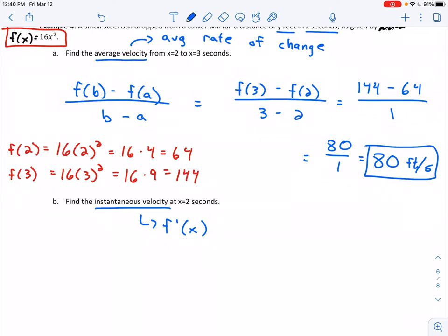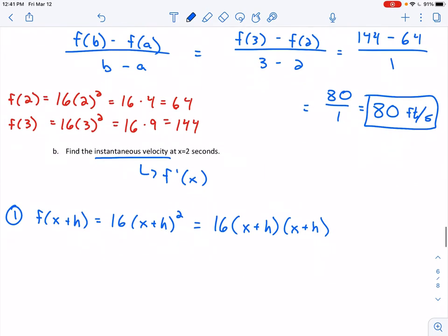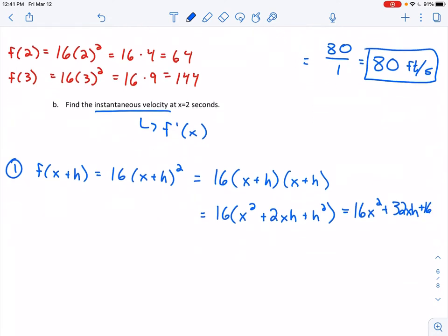We have to use our four-step process. Step one: find f(x+h) and simplify. So 16 times (x+h) squared. Remember, exponents come before multiplication. So 16 times (x+h)(x+h). I recommend you FOIL these binomials first before worrying about the 16. If I FOIL those out, I have 16 times (x² + 2xh + h²). Distributing that through gives 16x² + 32xh + 16h². That's step one.